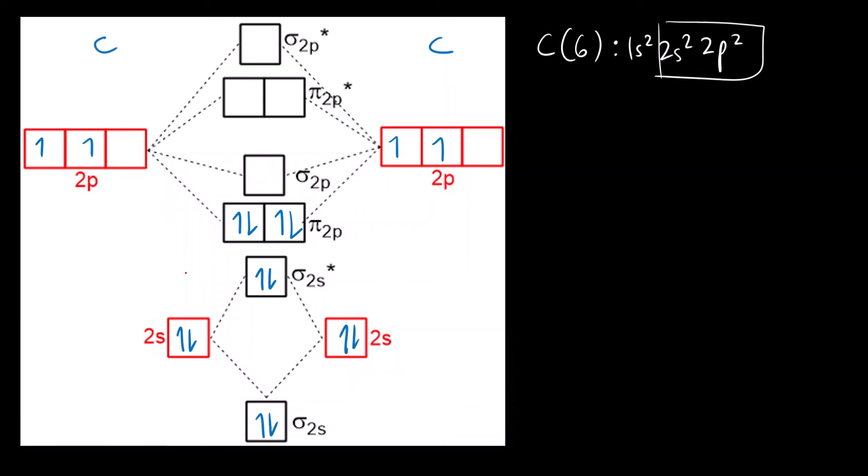Can you see any unpaired electrons? No, all of them are paired. There are four pairs of electrons, so C2 is diamagnetic. For a molecule to be paramagnetic, it should have at least one unpaired electron.